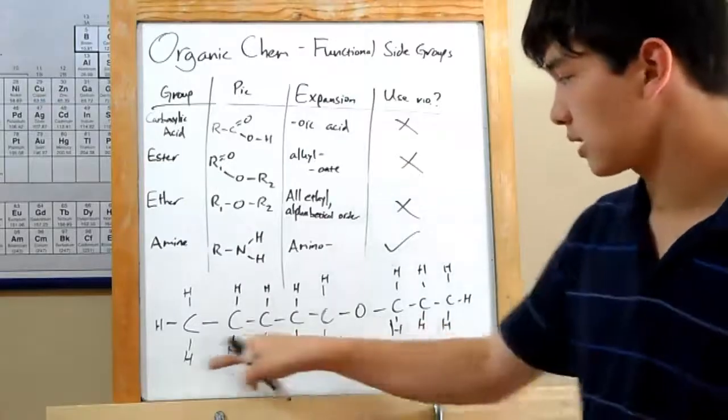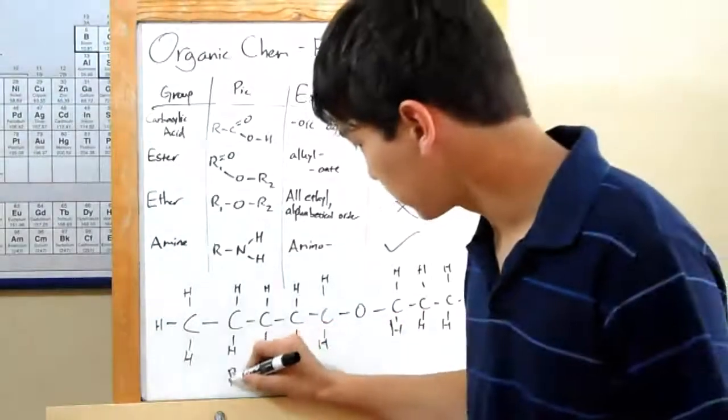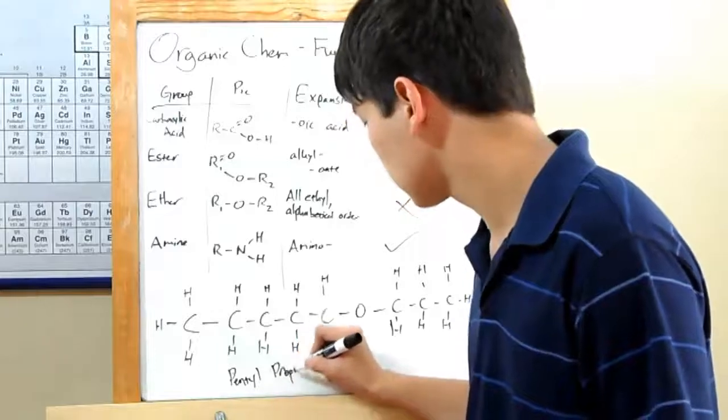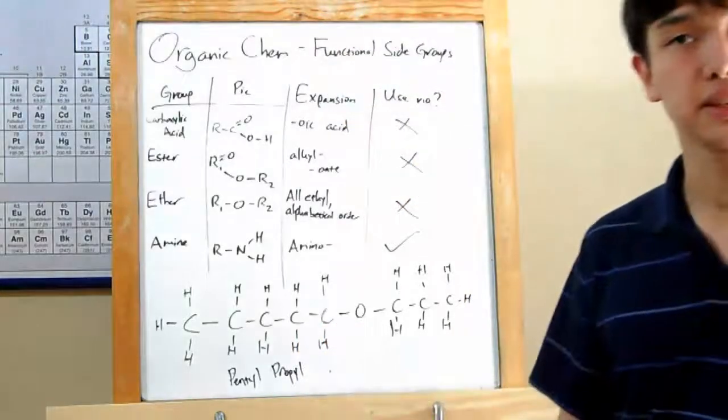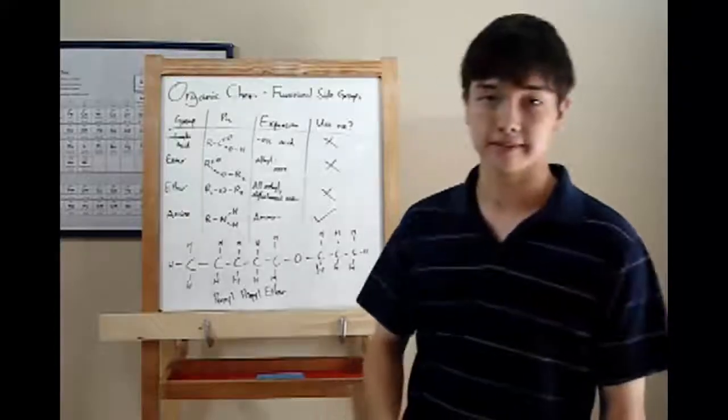So we've got a propyl and a pentyl. Well, PE comes before PR, so pentyl, propyl, and then we just need to end with ether. So this molecule is called pentylpropyl ether.